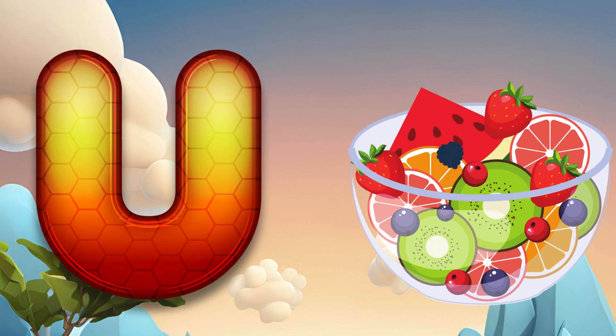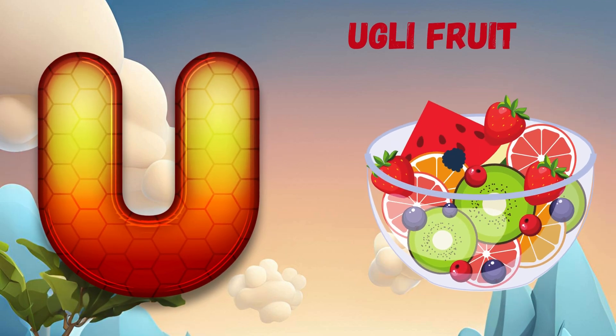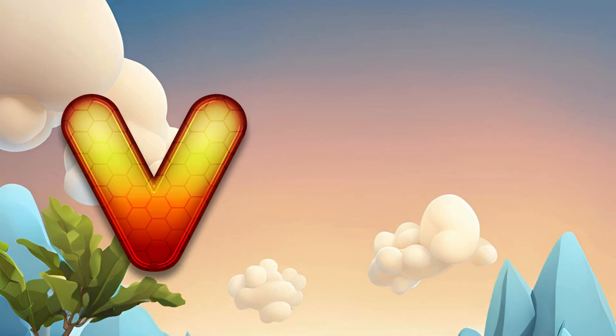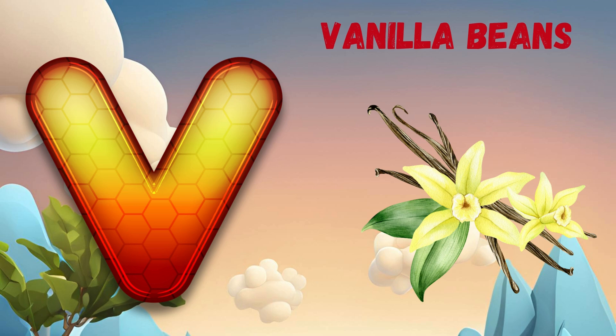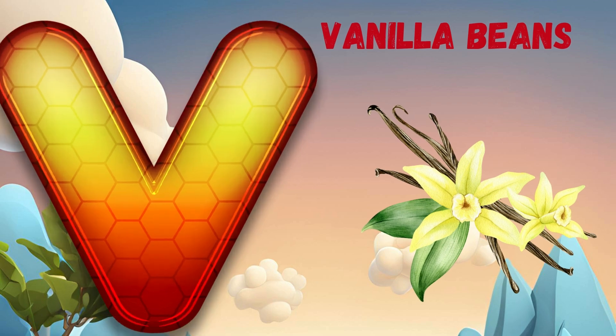U is for ugly fruit. Uh, uh, ugly fruit. V is for vanilla beans. V, v, vanilla beans.